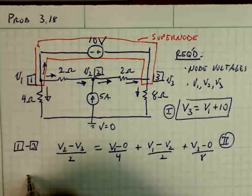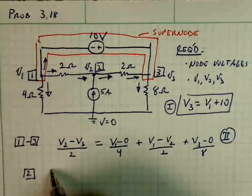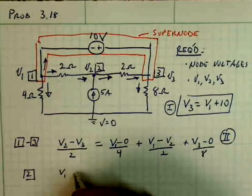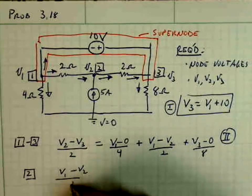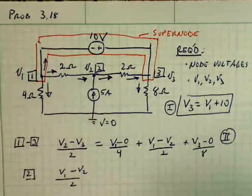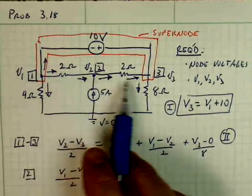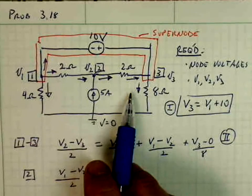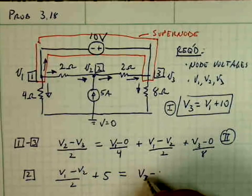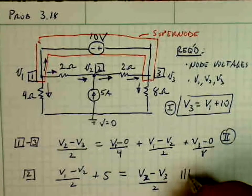And then finally we'll do KCL at 2. And by doing it at 2, I have current coming in, which is V1 minus V2 over 2. There's also 5 amps coming in, plus 5, and the current that is leaving is V2 minus V3 over 2. And this is the third equation.